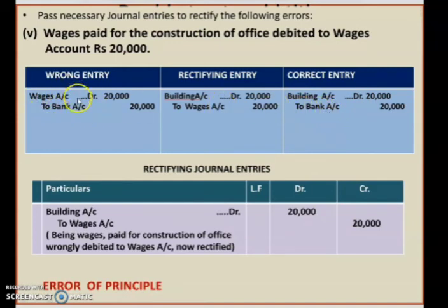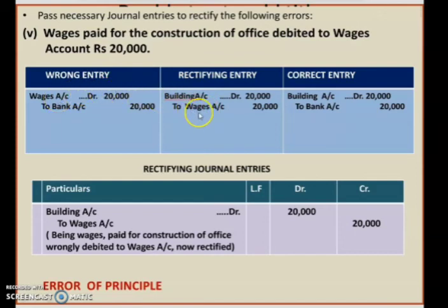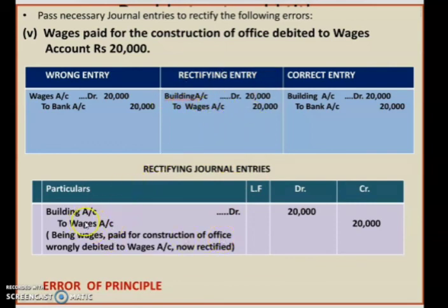It should be recorded in the building account. Bank account is correctly credited — the mistake is only with wages. To cancel the effect of wages which was debited, you have to credit it. Anything wrongly done on the debit side must be credited to cancel the effect. Wages was wrongly done, so credit it. The correct entry is building account on the debit side. After passing this as a working note in three columns, prepare the rectifying journal entry with narration. Such errors are known as error of principles.